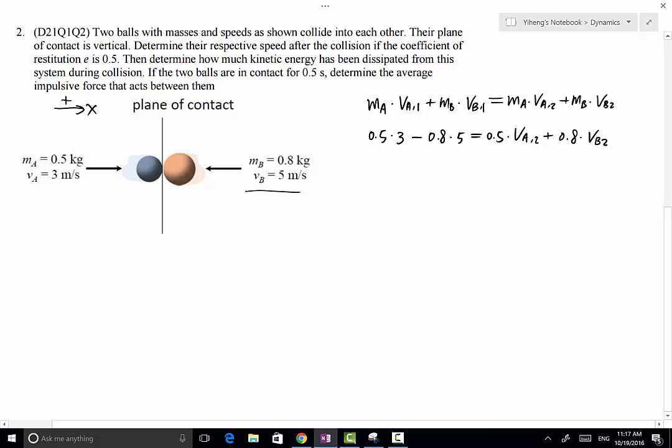From this equation we have two unknowns, so we cannot solve for either one yet. But we have another equation given by the coefficient of restitution: e equals the departing relative velocity (VB2 - VA2) divided by the initial approaching relative velocity (VA1 - VB1). This equals (VB2 - VA2)/(3 - (-5)) = 0.5.